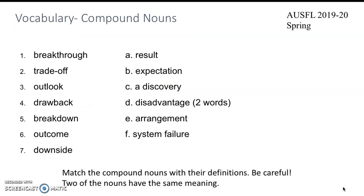Now let's match the compound nouns with their definitions. Be careful — two of the nouns have the same meaning. Let's check the answers. Number one is C, two is E, three is B, four is D, five is F, six is A, and seven is D again. So drawback and downside both mean disadvantage.